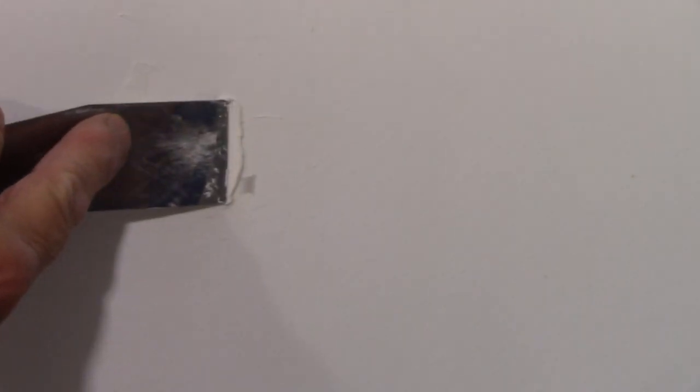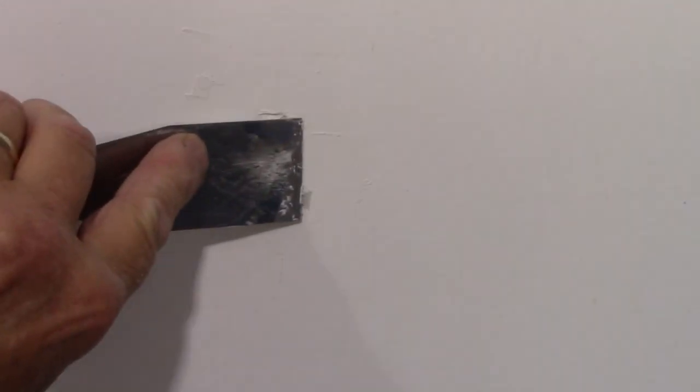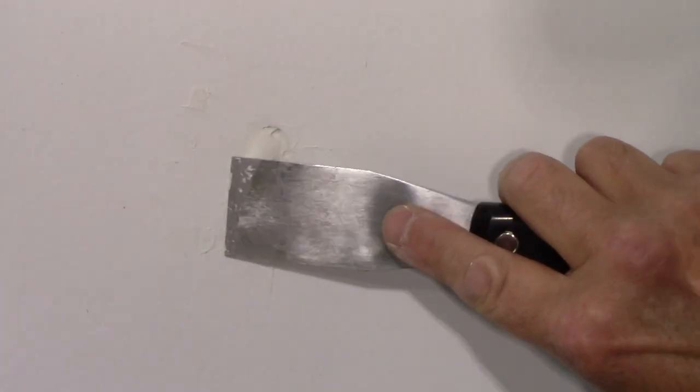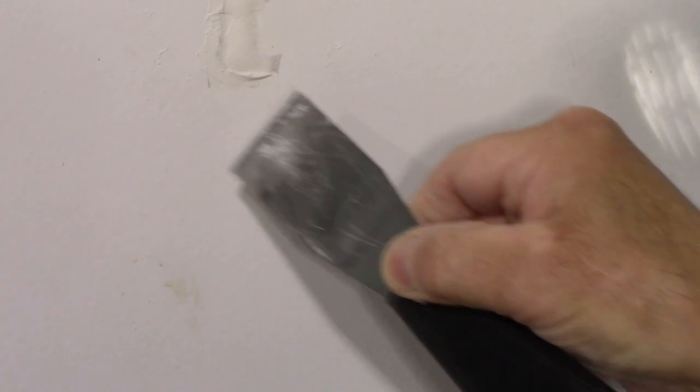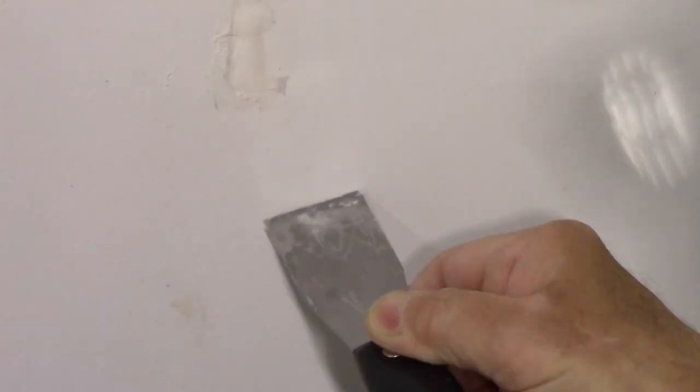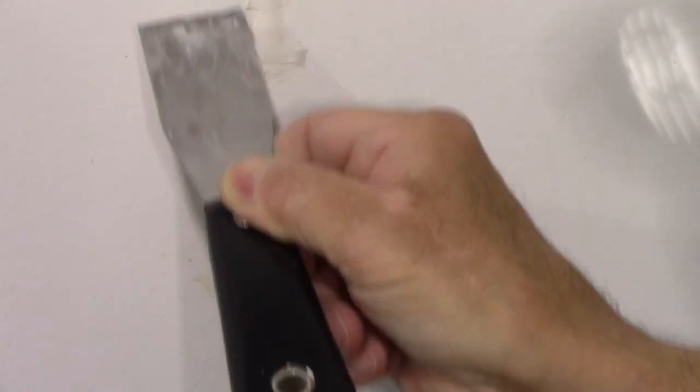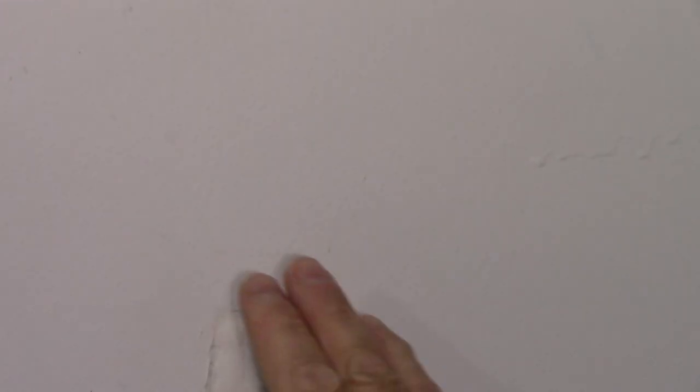Now that we have it fairly smooth, we're just going to let this dry. It's going to take a day or two to dry thoroughly because it is fairly thick. We're going to clean off the excess around the sides here. We're going to let this dry a little bit. Once it dries, we'll come back here, we'll lightly sand it, and we'll put our second coat on.